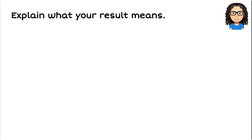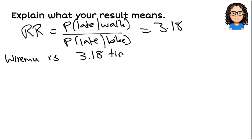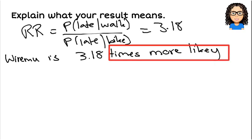Now what we need to do is explain what this result means. So remember we're comparing. It's the probability of being late given that he walked versus the probability of being late given that he biked. And that was a value of 3.18. So what it means is that Wiremu is, notice the wording here again, 3.18 times more likely. There is your key phrase. Okay. This many times more likely. As soon as you're talking about relative risk, that's the phrasing we want.